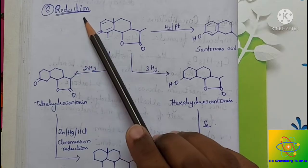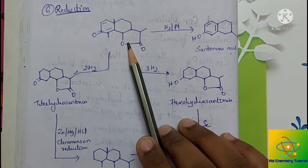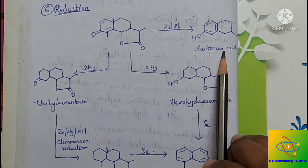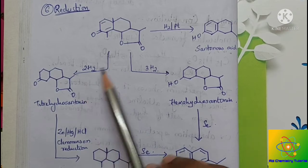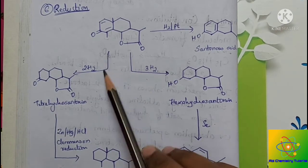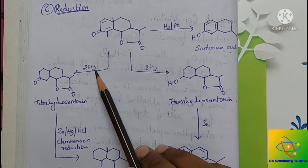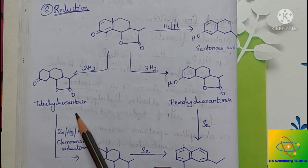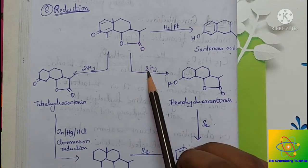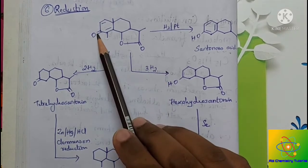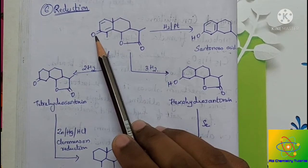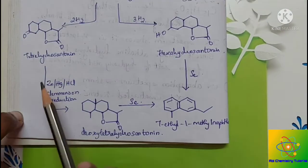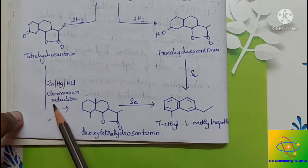Next, reduction of alpha-santone with 1 molecule of hydrogen gives santonous acid. It also gives other products on reduction. On addition of 2 molecules of hydrogen, both double bonds are reduced and it becomes tetrahydroxanthone. Similarly, addition of 3 molecules of hydrogen removes the C=O double bond and converts the keto group to an OH group, forming hexahydroxanthone.